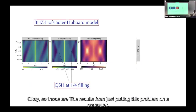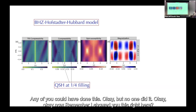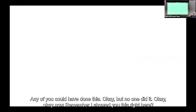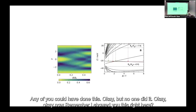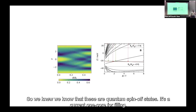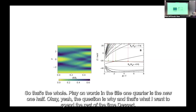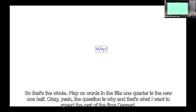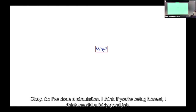Those are the results from just putting this problem on a computer — any of you could have done this, but no one did. The flux-versus-μ plot is exactly what you'd see for quantum spin Hall physics, occurring at one-quarter filling. That's the play on words in the title: one quarter is the new one half. The question is why — and that's what I want to spend the rest of the time understanding.